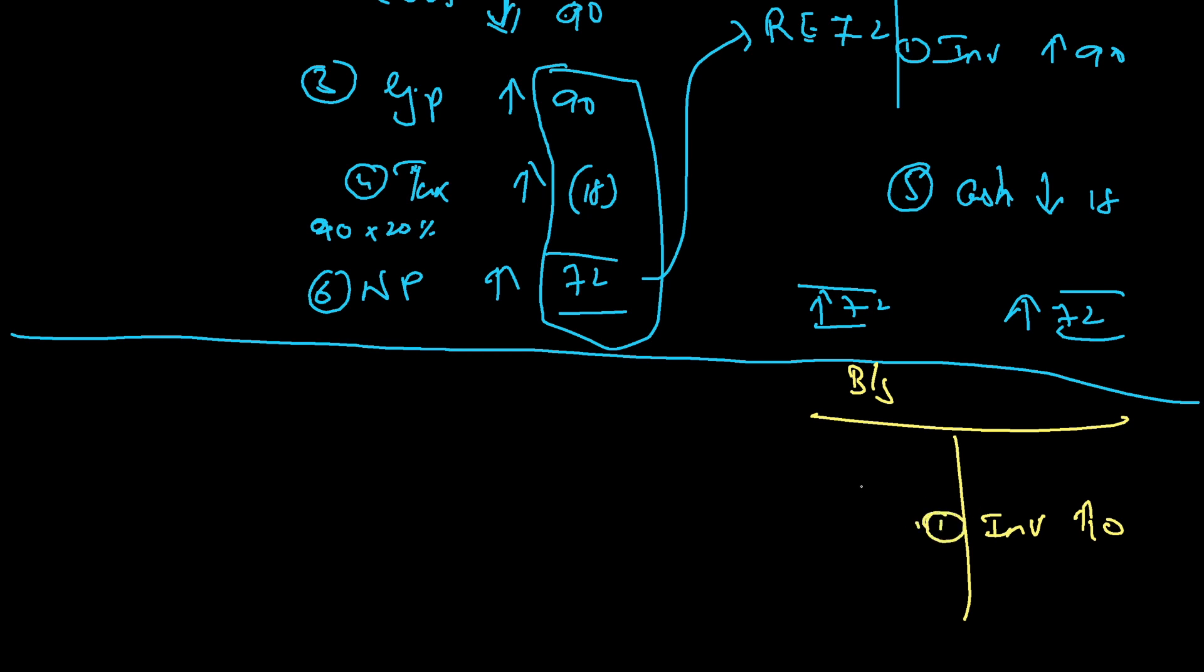First step, then income statement: cost of goods sold will come down by 10. Gross profit will go up by 10. Tax: I have to pay 20% on 10, so that will come to 2. I have to pay more cash, so my cash will come down by 2.